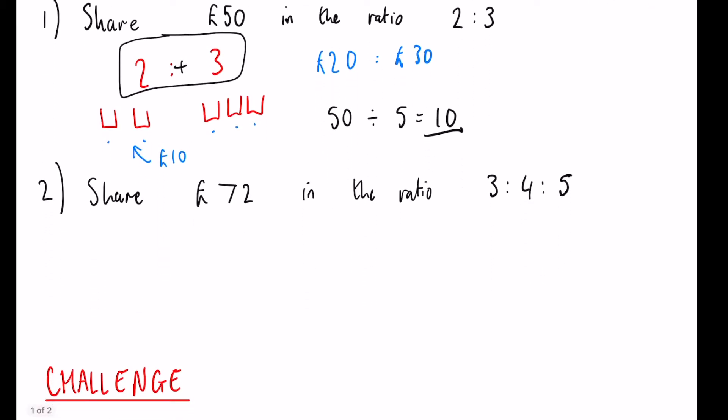Hopefully that makes sense. We're going to practice this in the second one as well. We're going to go with the quicker method again, just by adding the terms in the ratio together. So 3:4:5, we can just add all these together: 3 plus 4 is 7, add 5 makes 12.